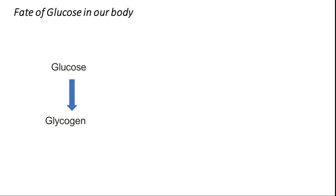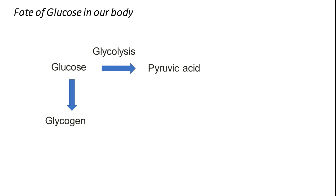When glucose enters the body and the person does not need energy, glucose will be converted to glycogen — a storage form stored in hepatic cells in the liver. When energy is needed, glucose will be submitted to a process called glycolysis, which we'll be seeing today. This process gives us pyruvic acid as the product and a little bit of energy.